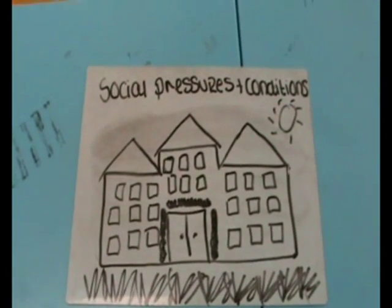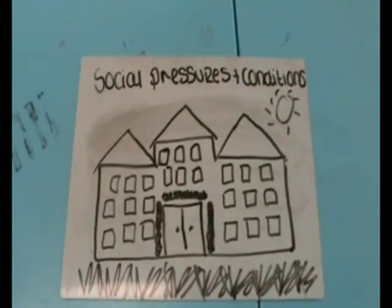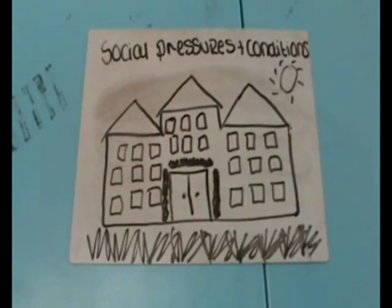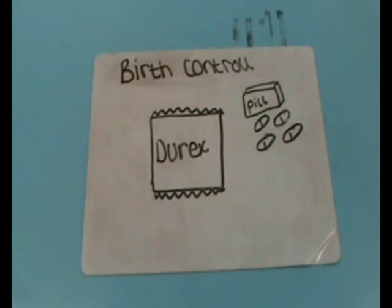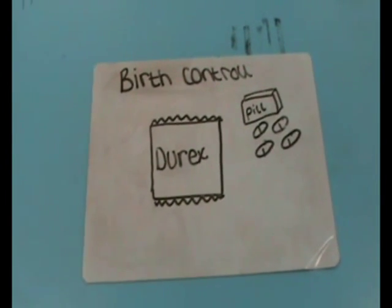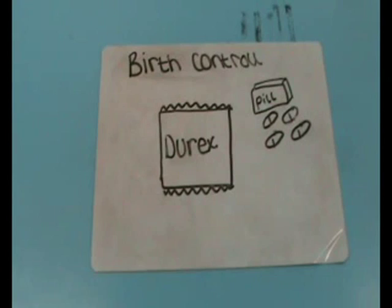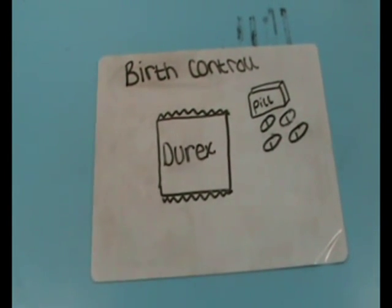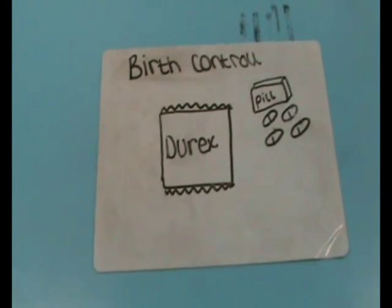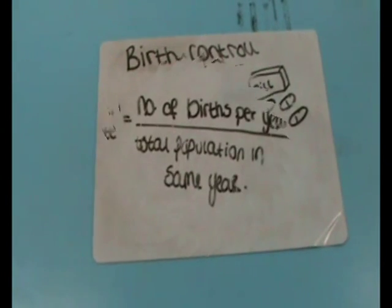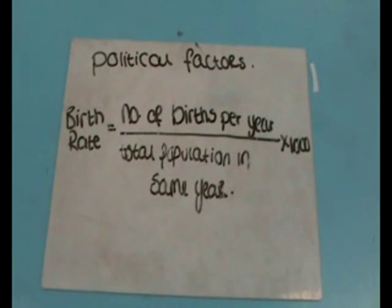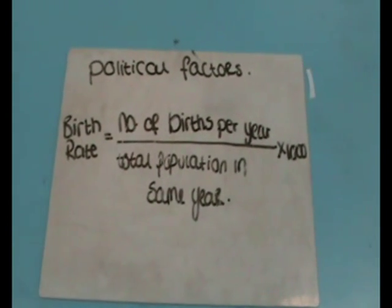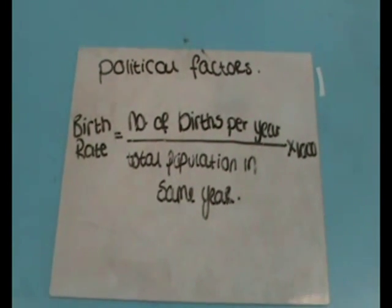Social pressures can also have an effect — in some countries larger families have a better social standing. Birth control also has an impact; in many countries where birth control is cheap or freely available, birth rate decreases because many people use contraceptive methods to prevent having children. Many governments also use propaganda to decrease the birth rate, such as in China, while other countries use propaganda to increase it.